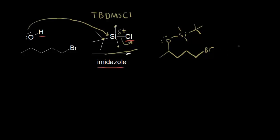Sometimes instead of drawing out all of that structure around the silicon, you might just see an oxygen followed by TBDMS for our protecting group — our tert-butyldimethylsilyl protecting group. This is another way of representing that portion of the molecule. Now that we've added our protecting group, we can go ahead and react with our organolithium compound.